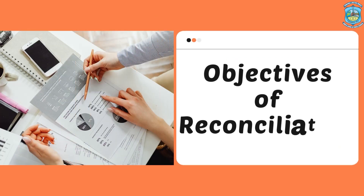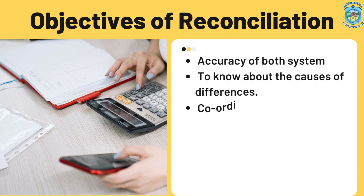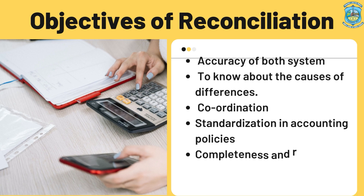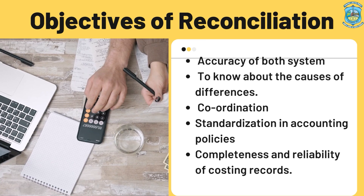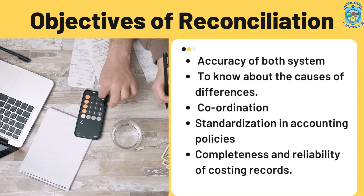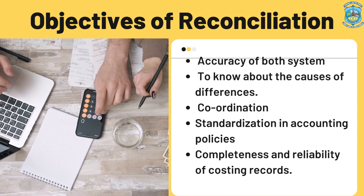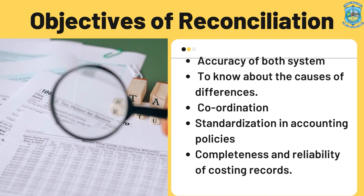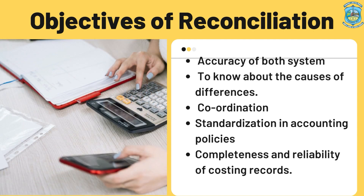Objectives of reconciliation: first, accuracy of both books — it ensures the accuracy of both the financial book and the cost book. Second, to know about the causes of the differences. Third, coordination between the cost book and the financial book. Fourth, standardization in accounting policy — with the help of the reconciliation statement we maintain a standard for policy. Fifth, completeness and reliability of costing records. These are the objectives for preparing the reconciliation statement.